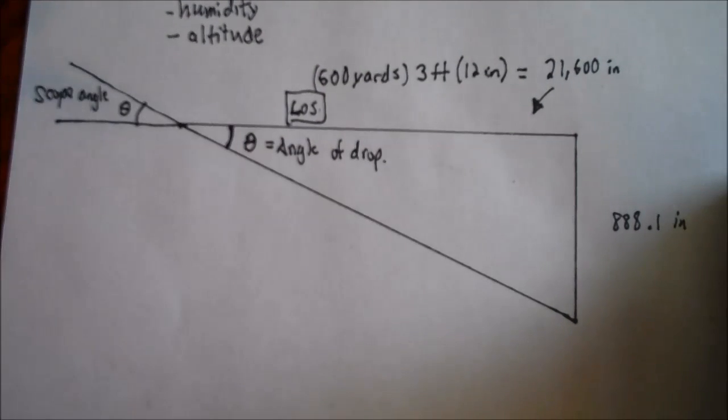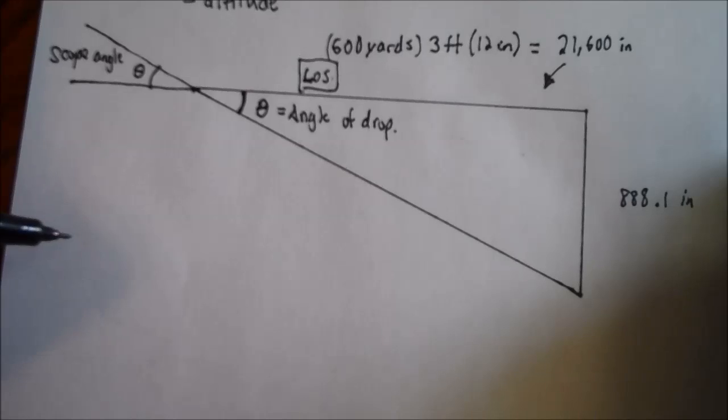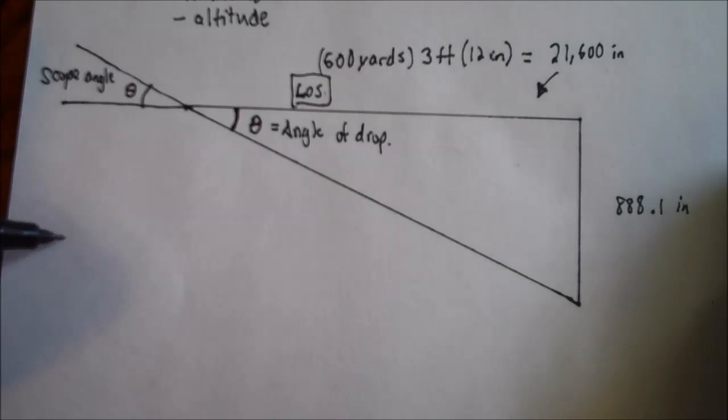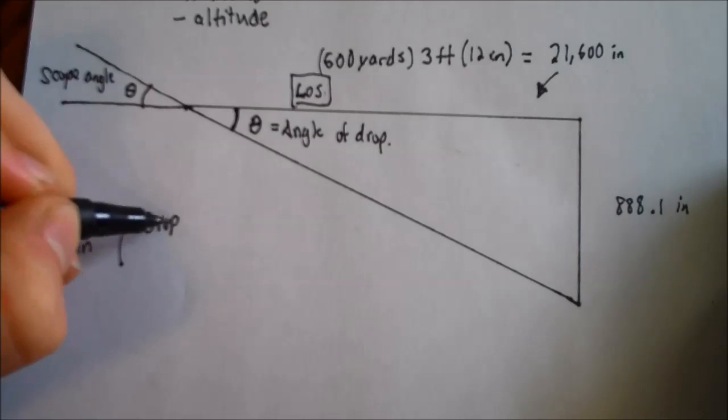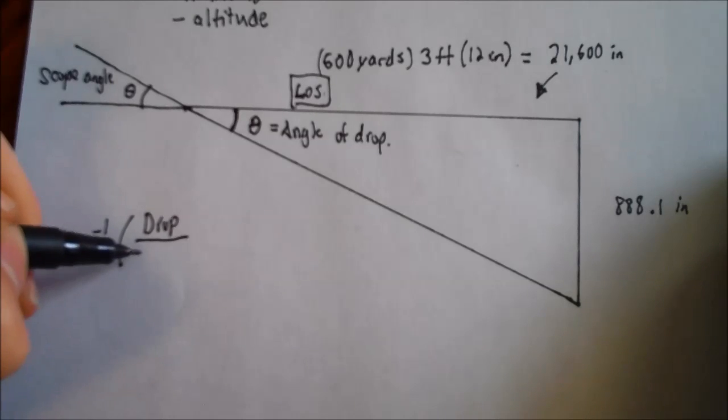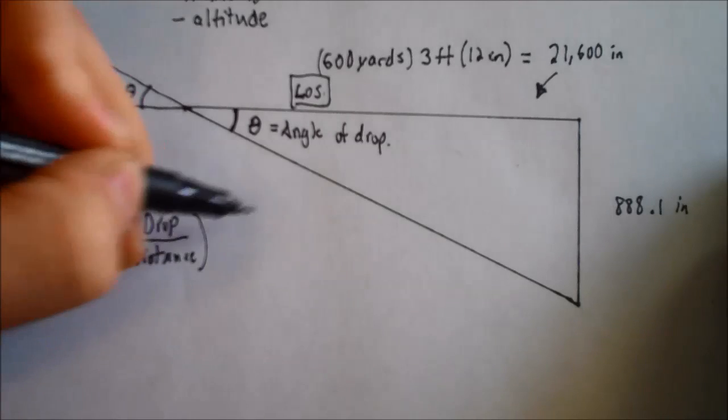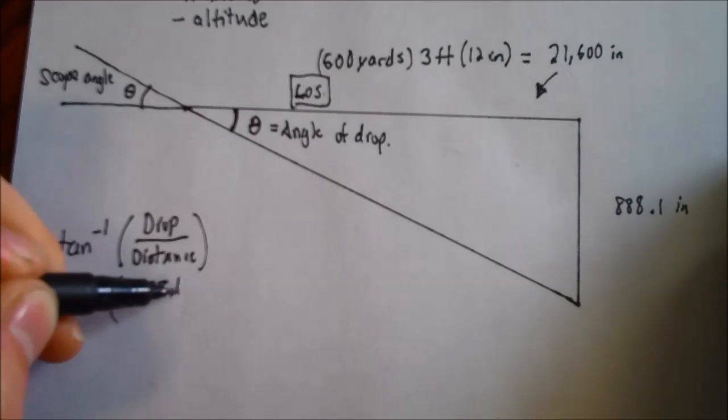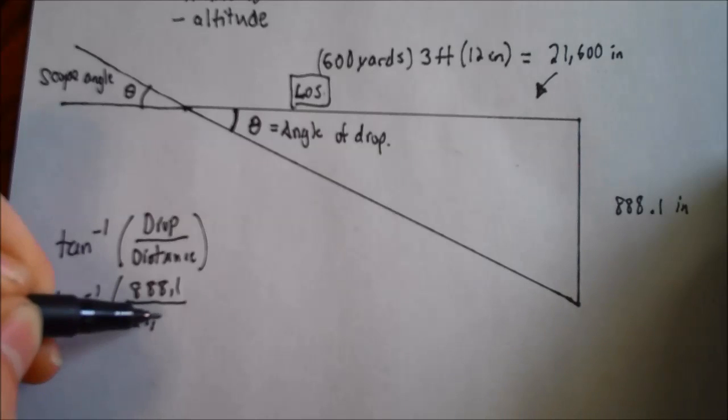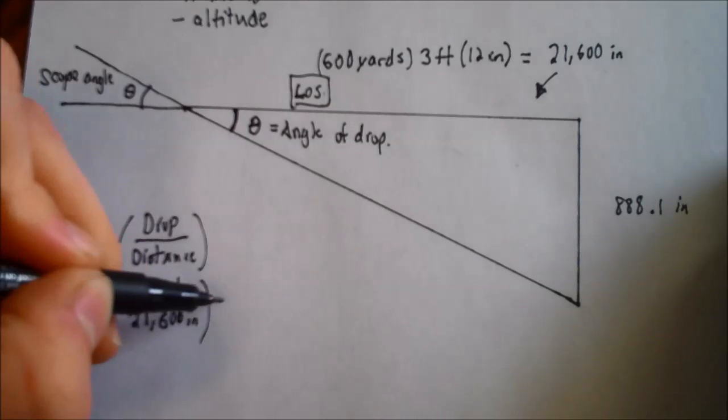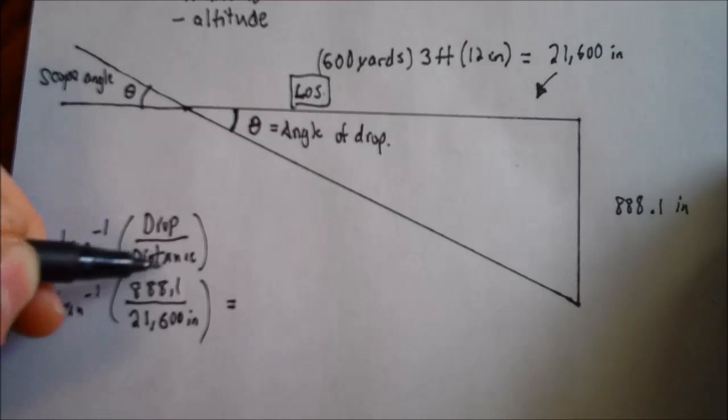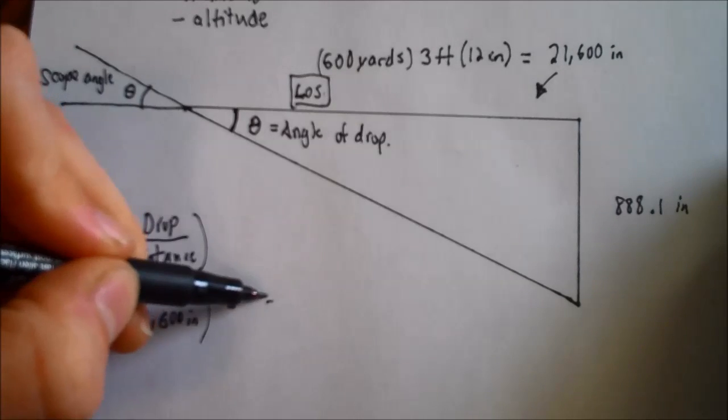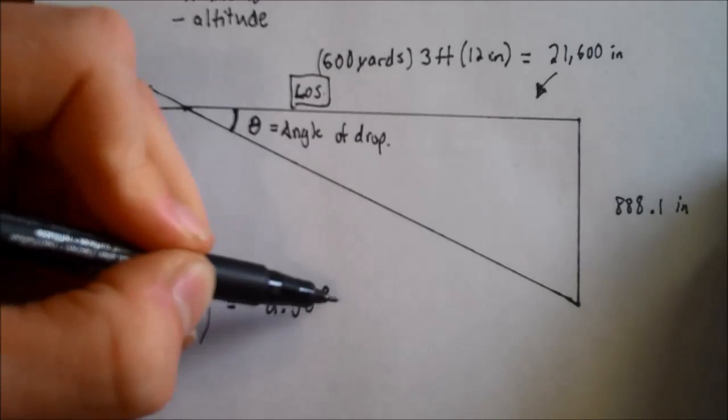Now we're going to find theta. If you know any trig, it's pretty easy. I'll just give you the finished equation though. You're basically going to do the inverse tangent of drop, the bullet drop, 888.1 inches, over the distance that you're shooting. And once we do that, we're going to have the inverse tangent of 888.1 over 21,600 inches. That's going to equal, when we divide this and then take the inverse tangent, equals 2.35 degrees. And that's going to equal theta.